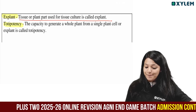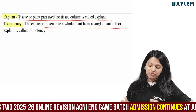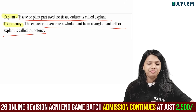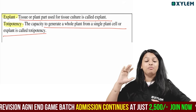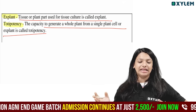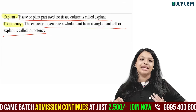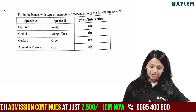Totipotency is the capacity to generate a whole plant from a single plant cell or explant. It is the ability to generate a whole plant from a single plant cell or explant.